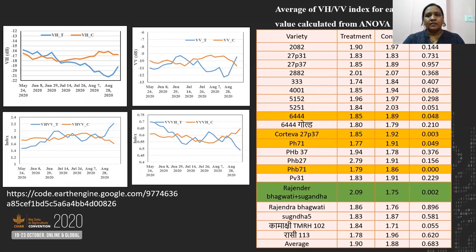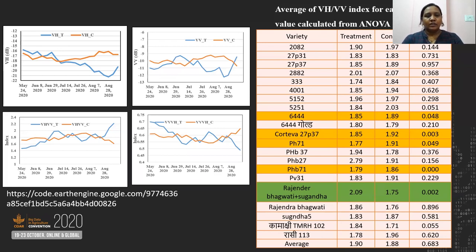For the Sentinel-1 time series, the VH data is based on the backscatter of a microwave sensor that captures backscatter at different polarization angles — importantly, clouds cannot obstruct this backscatter and become transparent. From Google Earth Engine, we could get VV and VH polarized bands. Using these bands, we developed two more indices: VH/VV and VV/VH. We found that the VH/VV index was consistent with rice crop phenology grown in Samastipur District. Using this index to run ANOVA, we found a significant difference between treatment and control in five varieties highlighted in orange and green: 6444, Corteva PH71, PHB71, Rajendra Bhagwati, and Sugenda.